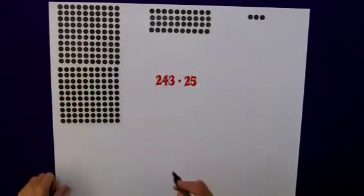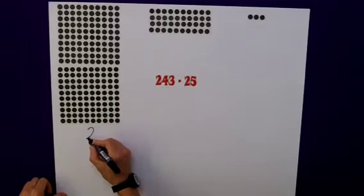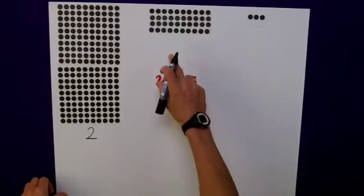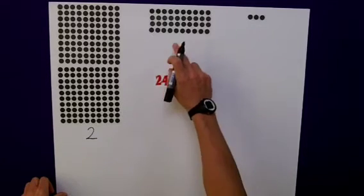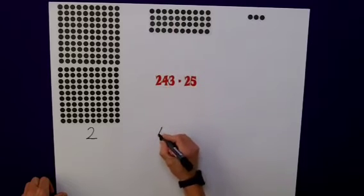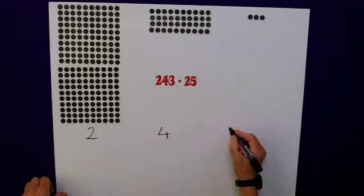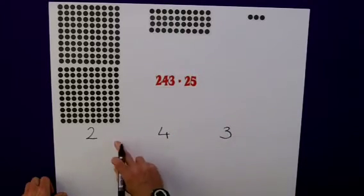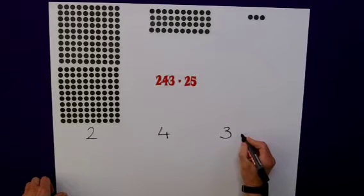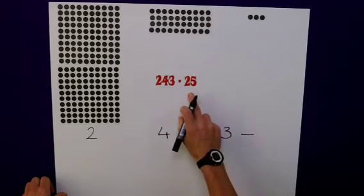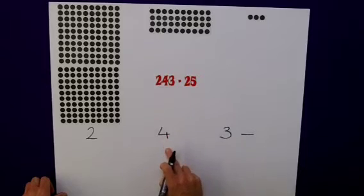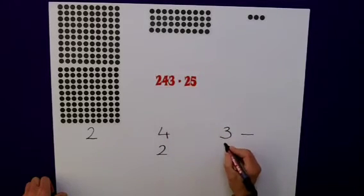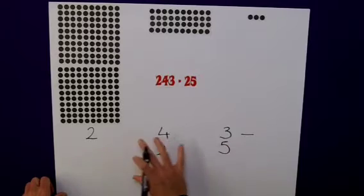Here I'm going to start with my 2 lots of 100. Here, I've got my 4 tens, 40. And here, I've got my 3 units. From this 243, I'm going to subtract my 25. Let's line everything up. I've got my 2 tens here and my 5 units here. So that's my question set up.